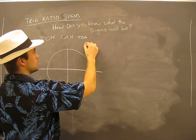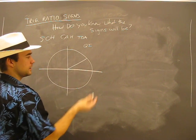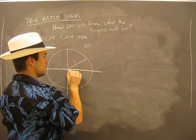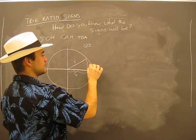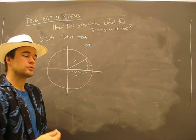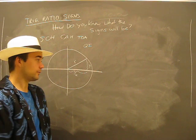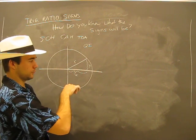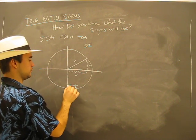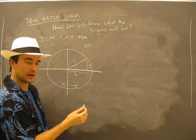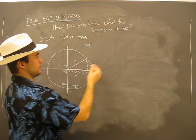Let's take a quadrant one angle. The first thing we need to realize is we're dealing with radius, a distance of x, and a height of y. Using our common sense — going back to grade eight — as you move to the right it's positive, as you move left it's negative, as you move up you're going positive, and as you move down you're going negative.